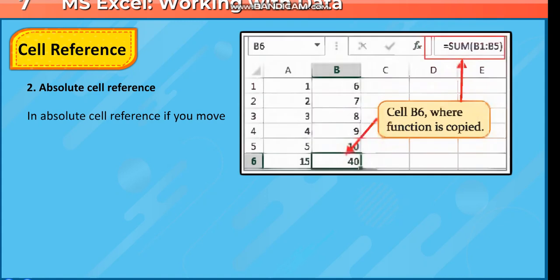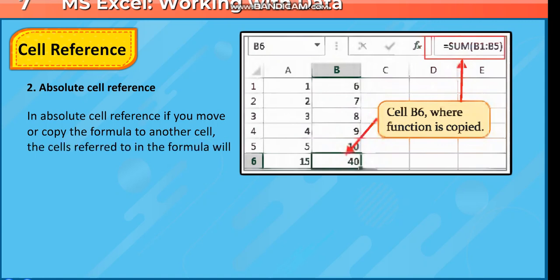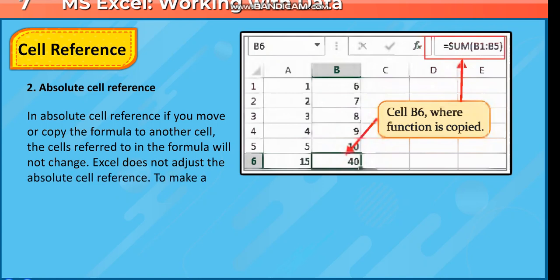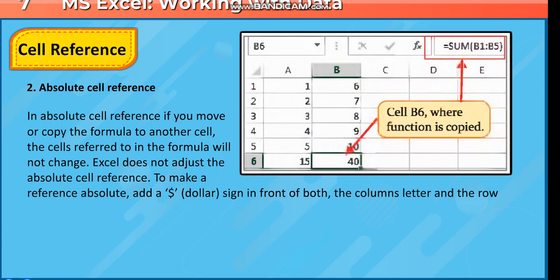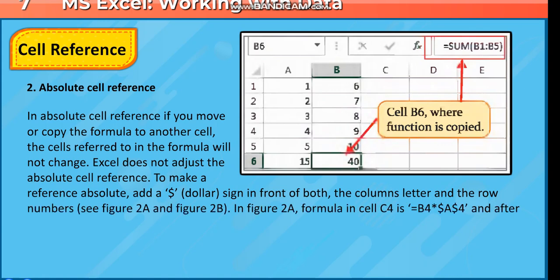Absolute cell reference: In absolute cell reference, if you move or copy the formula to another cell, the cells referred to in the formula will not change. Excel does not adjust the absolute cell reference. To make a reference absolute, add a dollar sign in front of both the column letter and the row number. See figure 2a and figure 2b.